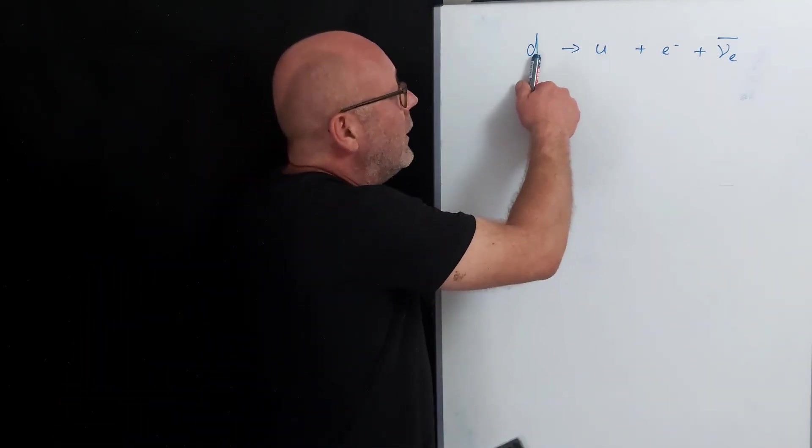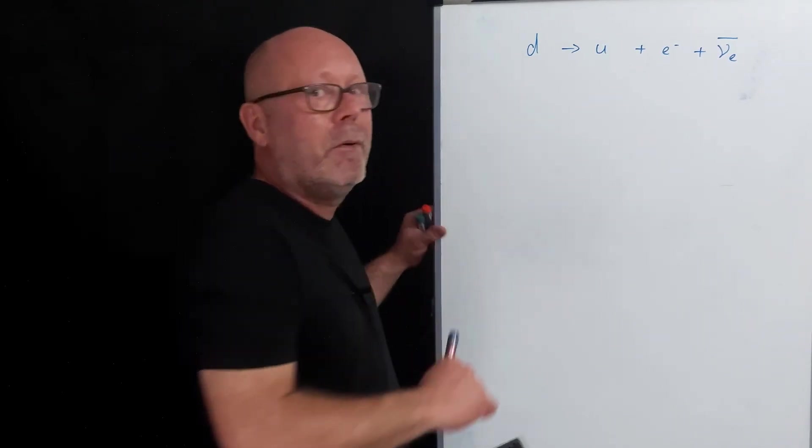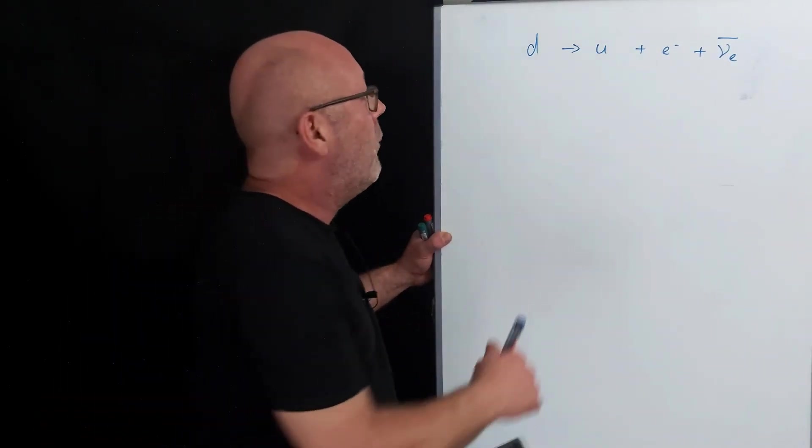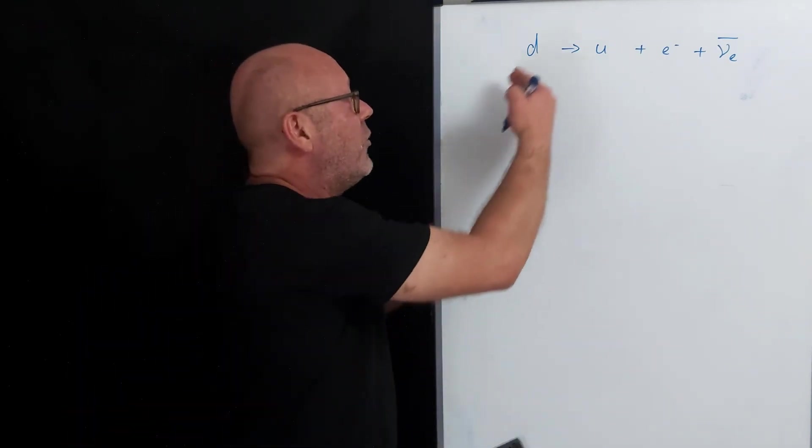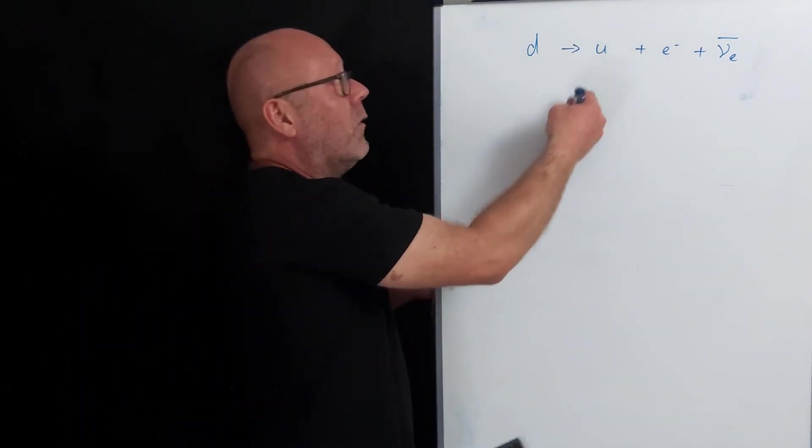The down is slightly heavier than the up. Therefore, the down is slightly less stable than the up, and naturally it will decay to something more stable, therefore the up.